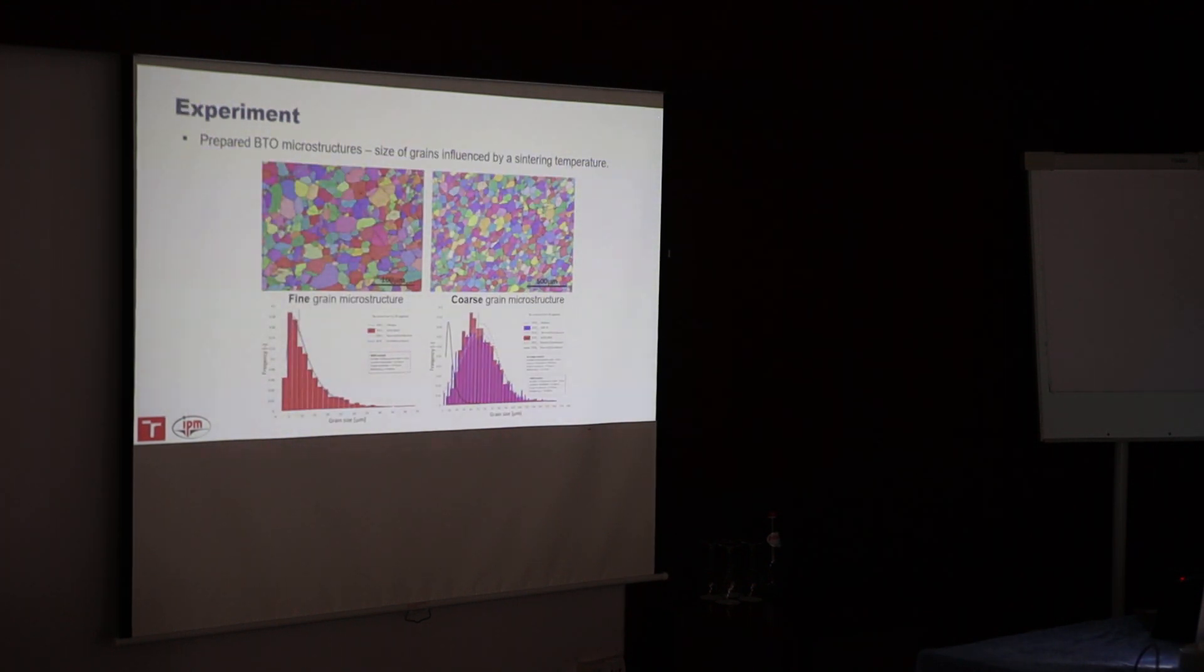In order to understand how we have defined grain microstructure and coarse grain microstructure, we prepared two types of these microstructures: fine grain and coarse grain. Just be careful on the scale, here is 500, here is 100, so these grains are in fact smaller than this one.